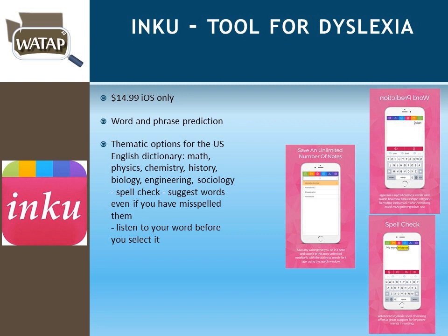Inku is an application specifically designed as a tool for students with dyslexia. It has word and phrase prediction and supports multiple subjects including English, math, physics, and chemistry. What I particularly like is its sophisticated spell check — even if the student misspells a word, it automatically provides suggestions using phonetic spelling. Students can listen to the word for audio feedback before selecting it into their document.